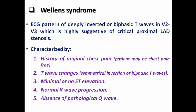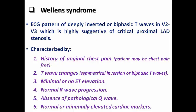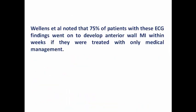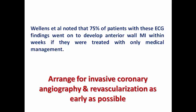It is important to recognize these ECG and clinical criteria. The cardiac markers are normal or minimally elevated, so the patient may have just unstable angina, non-STEMI, or chronic coronary syndrome without any evidence of myocardial injury. As mentioned, 75% of those patients develop anterior wall MI within weeks if treated with conservative treatment only. That's why we need to arrange for invasive coronary angiography and revascularization as early as possible. Please do not discharge those patients and do not give them an elective coronary angio appointment — they need urgent coronary angio and revascularization, and should be admitted if feasible.